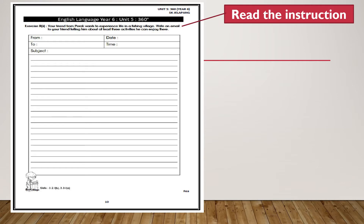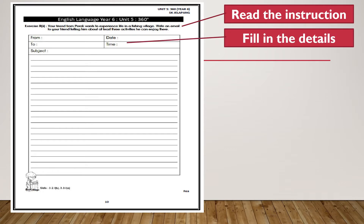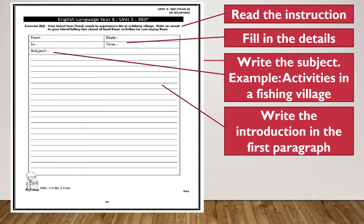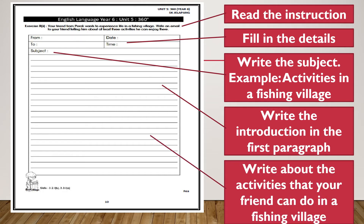After you read the instruction, you fill in the details about the date, the time, then write the subject — for example, activities in a fishing village. Then write the introduction in the first paragraph, and then write about the activities that your friend can do in a fishing village.